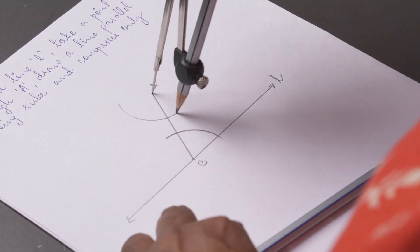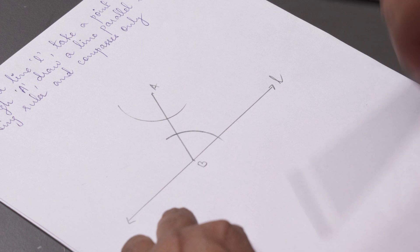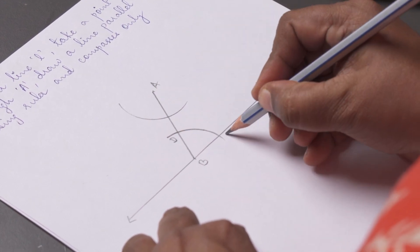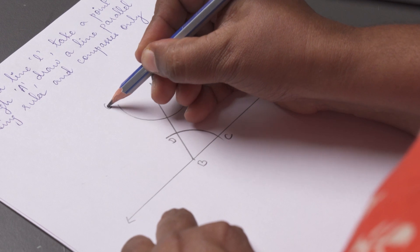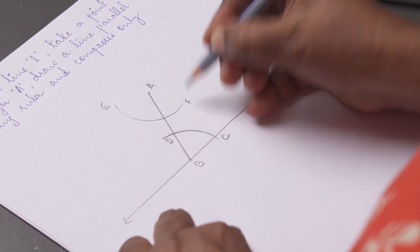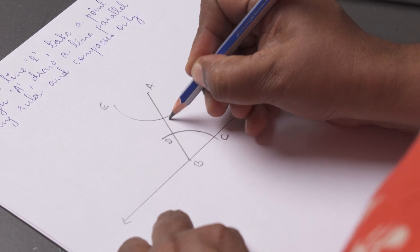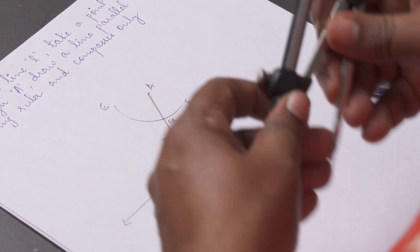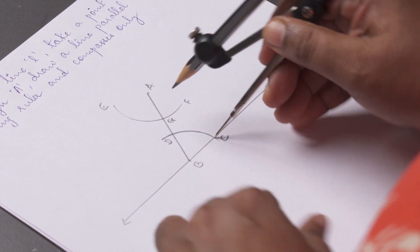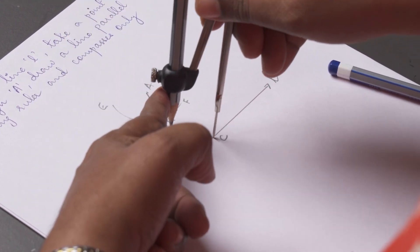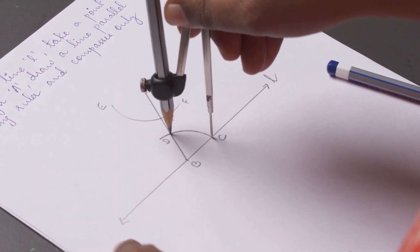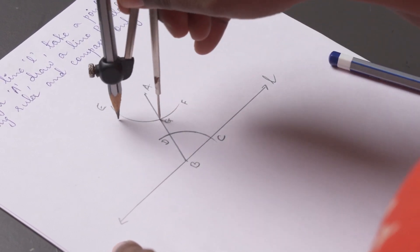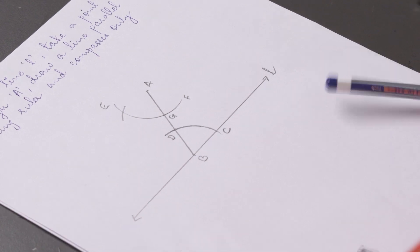With the same radius, now place the compass at point A. Draw an arc EF, cutting AB at G. Next, place the compass at C, and taking CD as the radius, now place the compass at G, and draw an arc, cutting the arc EF at H.